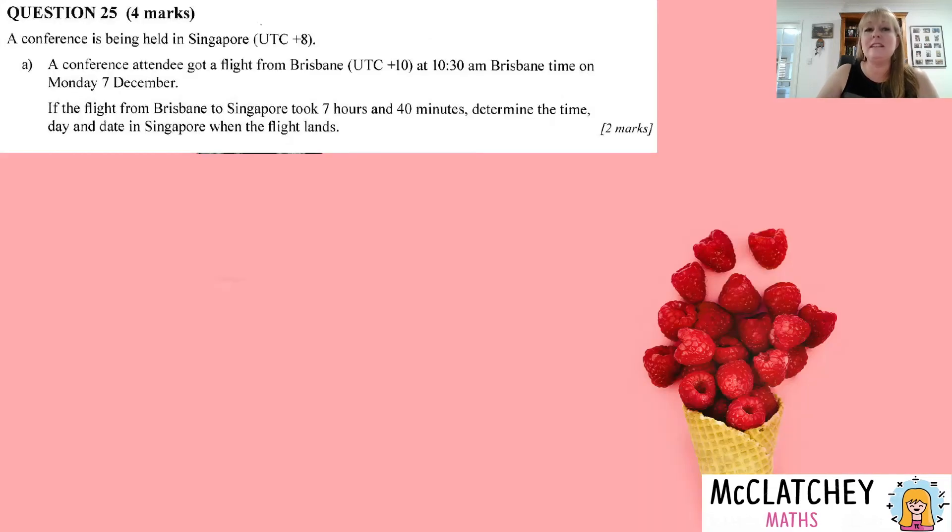Okay, we're on to our final question. It's another short answer question. This one's about time differences and time zones. And a lot of people don't like seeing the universal coordinated time. They prefer GMT because textbooks tend to focus a lot more on GMT. You don't need to worry too much about what the difference is because if someone is GMT plus eight, they're also UTC plus eight. So we're going to focus on that. We've got a conference attendee who's going to a conference in Singapore. We've given Singapore's coordinates. They're coming from Brisbane. There's Brisbane's coordinates and they're leaving at 10:30 a.m. Brisbane time on Monday, the 7th of December. So the flight is going to take seven hours and 40 minutes. When is the flight arriving in Singapore? We need to give that in Singaporean time, day and date.